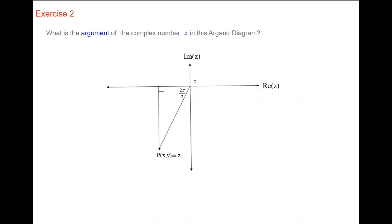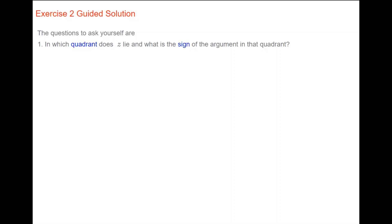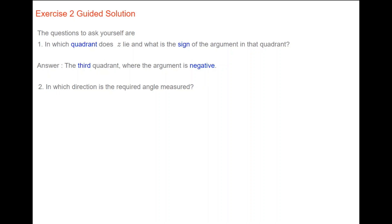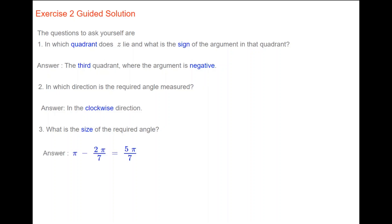Here's a quick exercise: what is the argument of the complex number Z shown in the Argand diagram? Ask yourself: in which quadrant does Z lie, and what is the sign of the argument? Answer: the third quadrant, where the argument is negative, measured in the clockwise direction. The size of the required angle is π minus 2π/7, which is 5π/7. Putting it all together, the argument of Z is minus 5π/7.